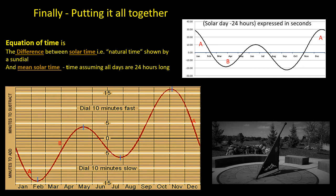In region C, the solar day is once again longer than 24 hours, so the middle of the day gets later and later each day. This continues until July the 26th when a sundial is 6 and a half minutes slow. Finally, in region D, the solar day is once again shorter than 24 hours, so the middle of the day shifts earlier, and this continues until November the 3rd when a sundial will be 16 and a half minutes fast.